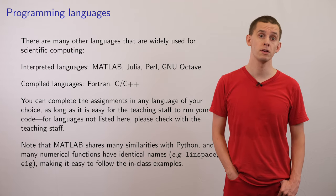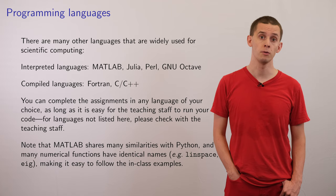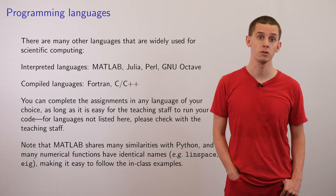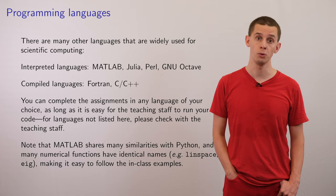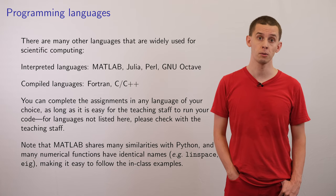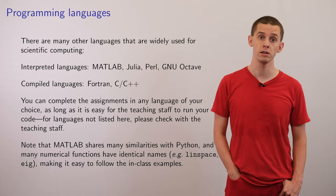There are many other languages that are used for scientific computing. There are other interpreted languages, such as Matlab, Julia, Perl, or GNU Octave, and there are also compiled languages like Fortran, C, and C++.